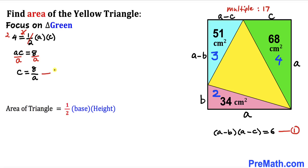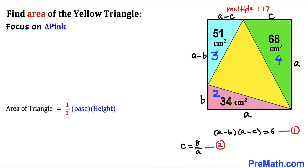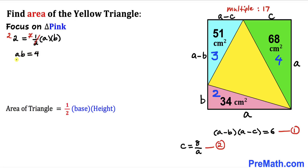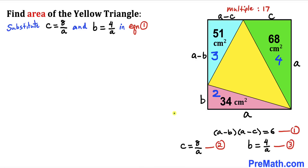Now let's focus on the pink triangle, whose area is 2 and whose side lengths are a and b. Using the formula: 2 = ½ × a × b. Multiplying both sides by 2 gives a × b = 4. Dividing both sides by a, we get b = 4/a. Let's call this Equation 3.